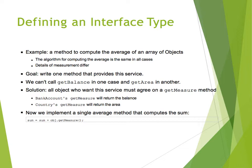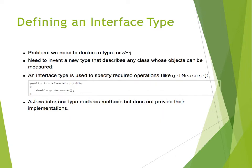After all classes agree on the same signature for getMeasure, you can write code that simply calls getMeasure for all objects. Depending on the object, a different implementation of getMeasure will be called. Now let's talk about how to define an interface type. We need to declare a type that describes any class whose objects can be measured.